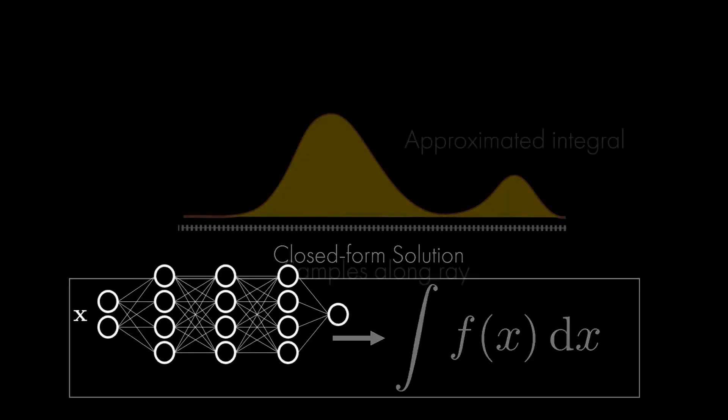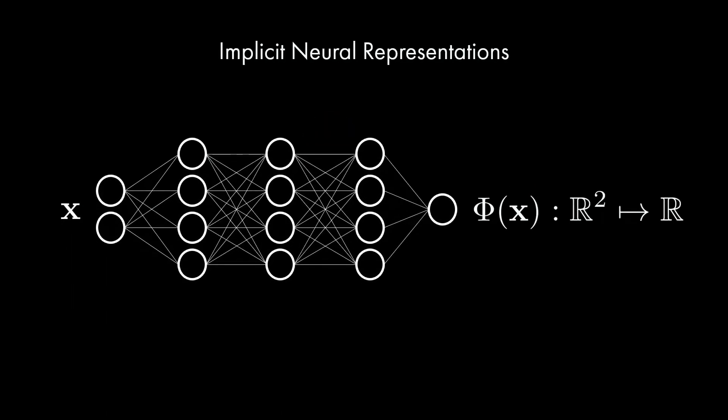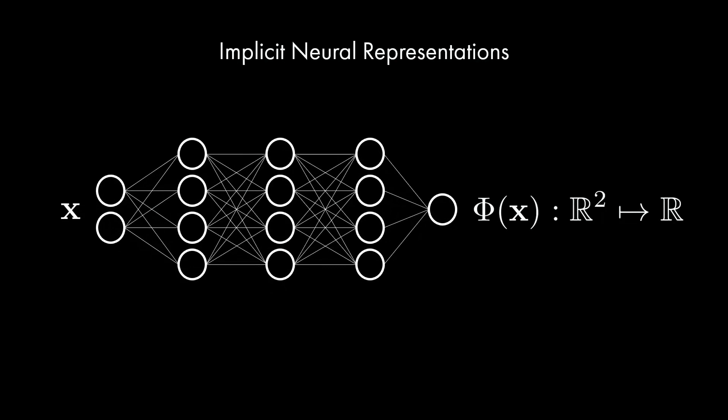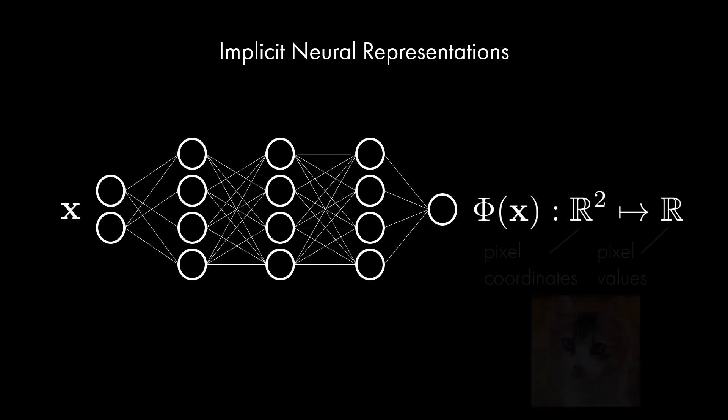Key to our method are an emerging class of implicit neural representation networks. These networks parameterize a signal or function of interest by learning a mapping from the low-dimensional input space of the function to the low-dimensional output. For example, pixel coordinates to pixel values in an image.